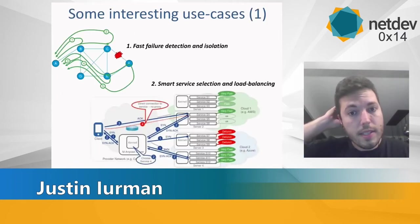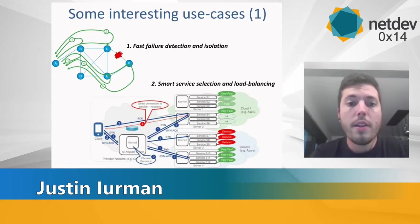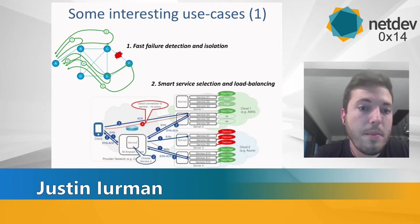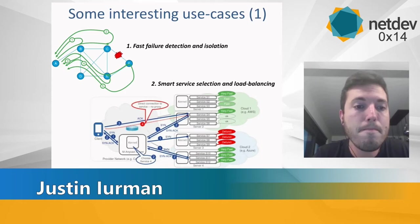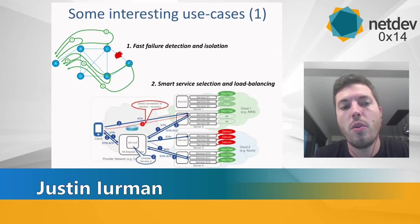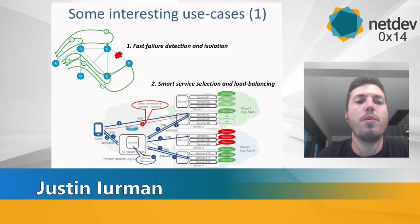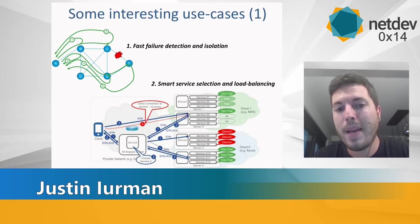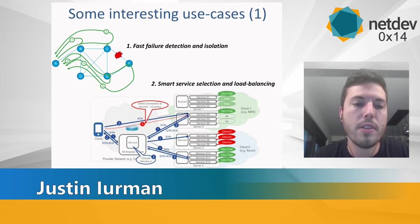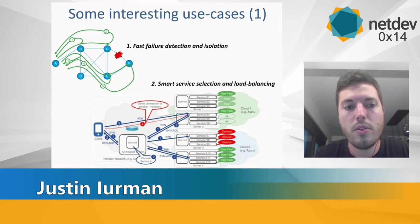Let's review some interesting use cases for IPv6 and IOAM. The first is fast failure detection and isolation. You might say we already have traceroute, but traceroute is slow. The key difference here is that we only need one packet: we send one packet and each node on the path replies with one packet containing IOAM data. So we use N packets where traceroute would use 2N packets, and we only need one round-trip time to get the data back.